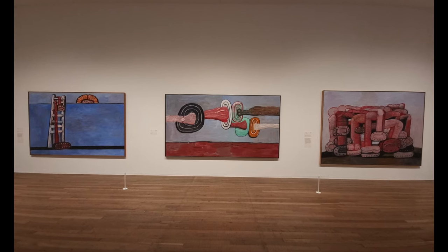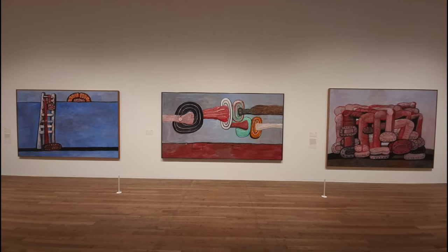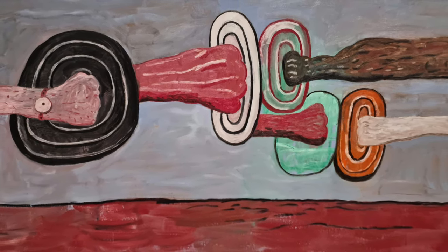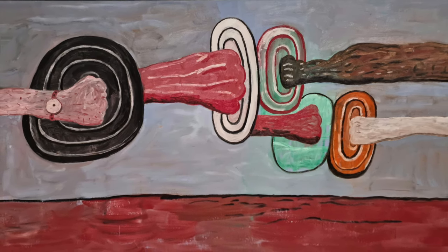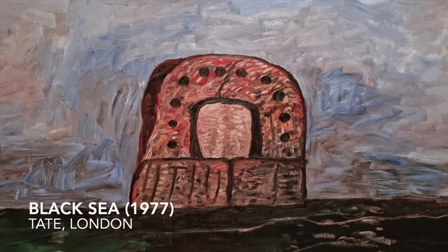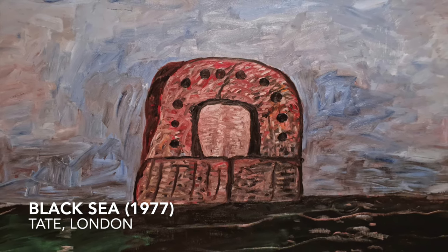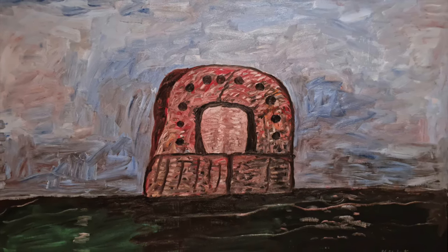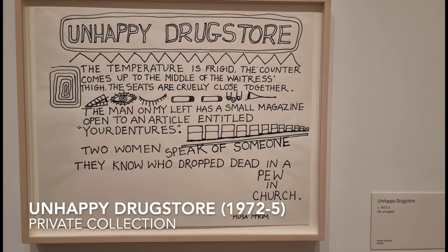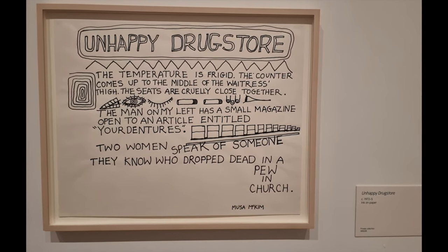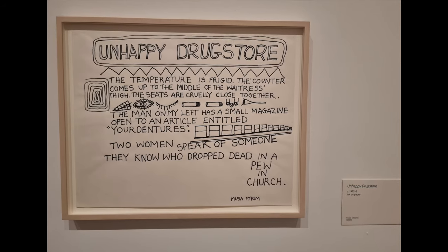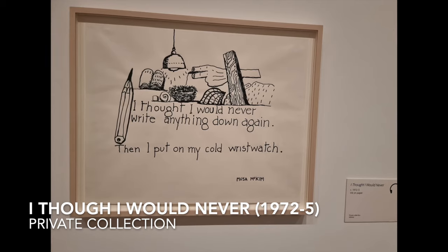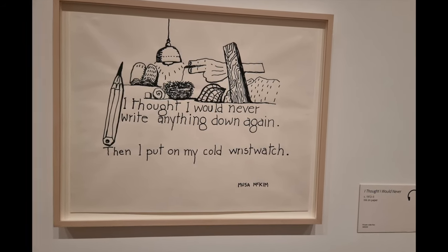Guston lost his father when he was very young, and a recurring motif in some of these works is a noose. Unfortunately, Guston's father killed himself, and it was Guston that found the body. This painting, The Black Sea, which is coming up now, is one of my favourites — it may well refer back to the Black Sea area of Ukraine, where his parents emigrated from to escape anti-semitism. There are some charming works which give a hint of the domesticity of Guston and his wife, Musa McKim. She was a poet, he was an artist, and we see how they collaborated informally in some works, often referring back to the domestic.